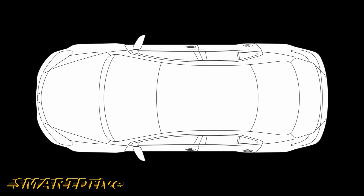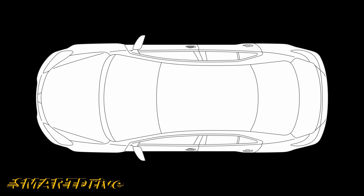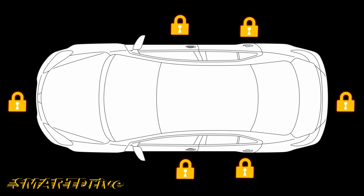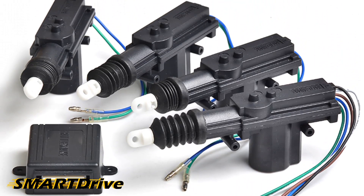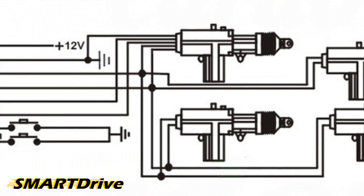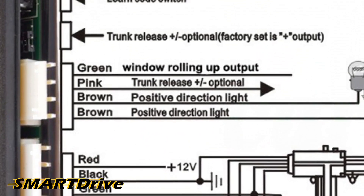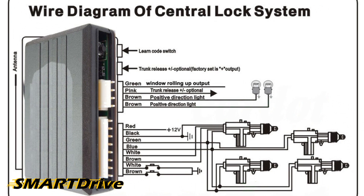Nowadays all cars are equipped with the central locking system. The central locking system of a car controls all four passenger doors, the engine hood, as well as the boot space lid. The central locking system mainly consists of electronic locks which are controlled by the master lock. There is also an electrical control unit — ECU — which controls all the locking mechanisms of a car.